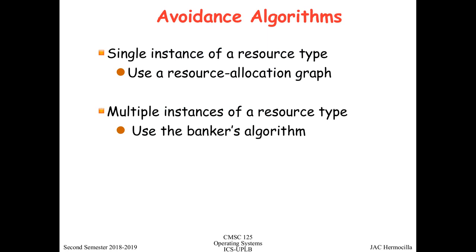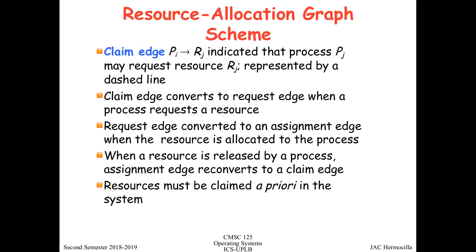How do you perform deadlock avoidance? There are two types of algorithms depending on the number of instances of a resource type. If you have a single instance of a resource type, you can use a resource allocation graph, which we defined earlier. Or, if you have resources with multiple instances, you can use the Banker's Algorithm. Let's start with the first one, where the resource types have only one instance.